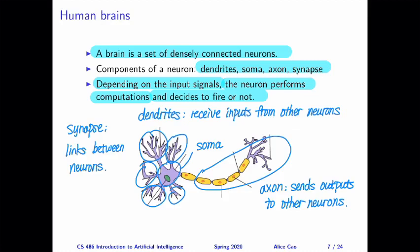Hello, everyone. This is Alice Gao. In the previous video, I talked about a little bit of history on deep learning, then the motivation for using a neural network rather than other machine learning models, and finally the structure of a neuron. In this video, we are going to look at a computational and mathematical model of a neuron.